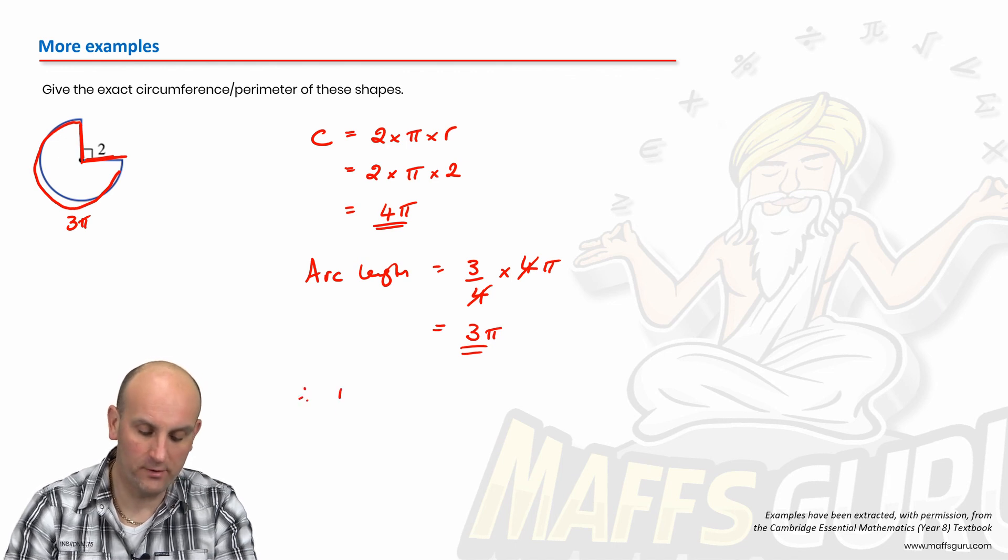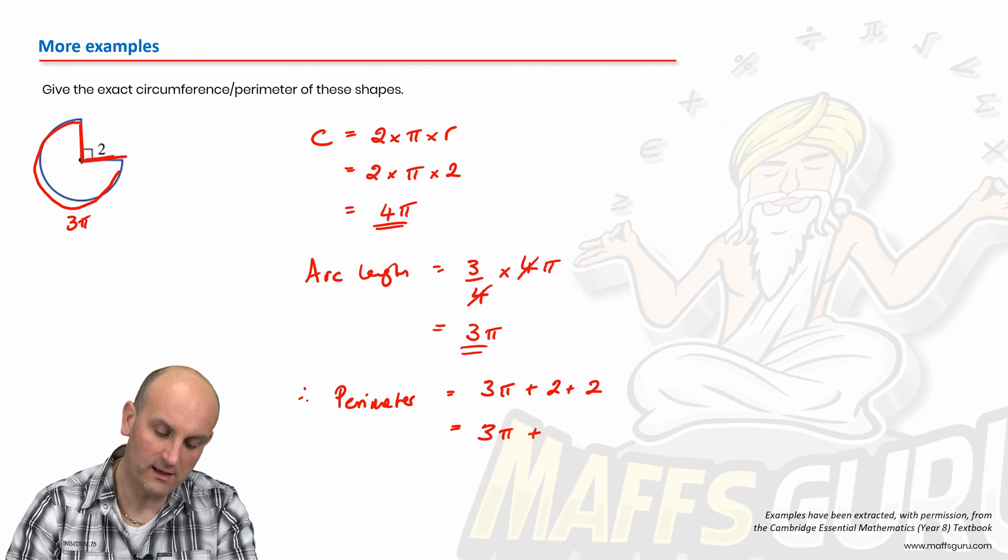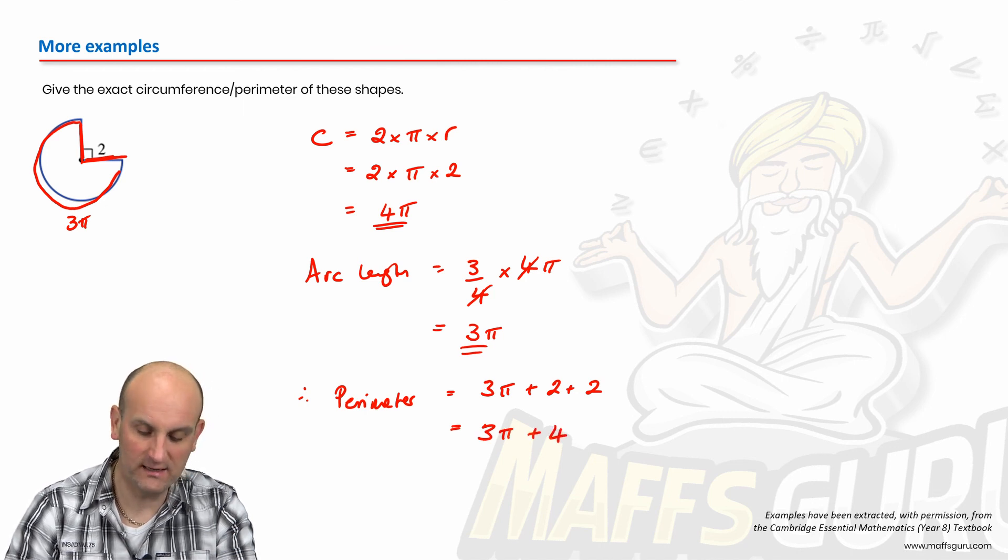So, therefore, perimeter, and notice my working out, all of it is important, is 3 pi plus 2, plus 2, which is 3 pi plus 4. And it didn't give me any units, so I'm going to write the word units.